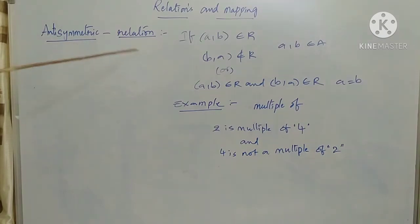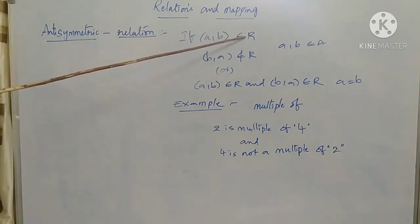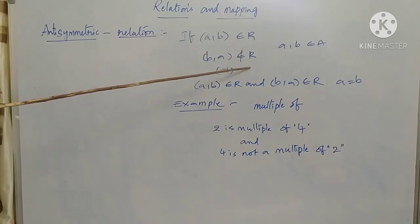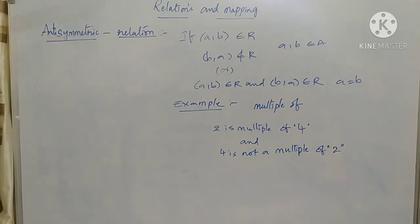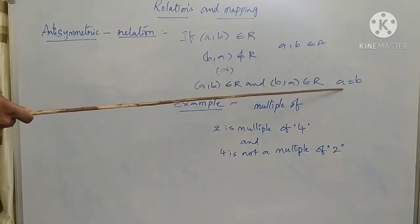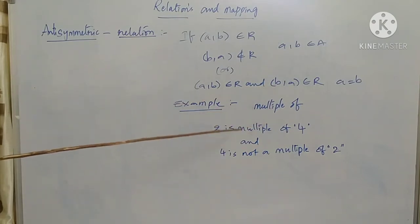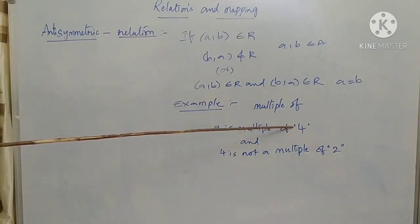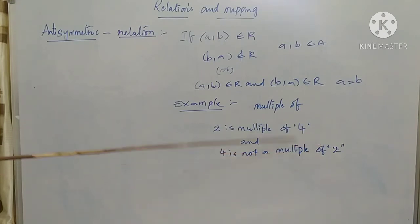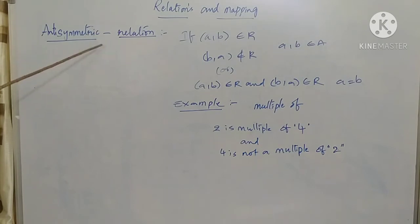The next relation is the anti-symmetric relation. If (A, B) belongs to R and (B, A) does not belong to R, it is called an anti-symmetric relation. More precisely, (A, B) belongs to R and (B, A) belongs to R only if A equals B. For example, with multiple of: 2 is a multiple of 4, but 4 is not a multiple of 2. This type of relation is called an anti-symmetric relation.